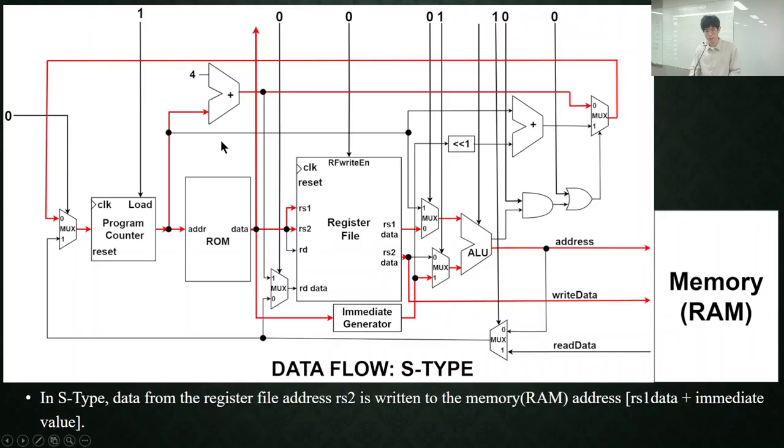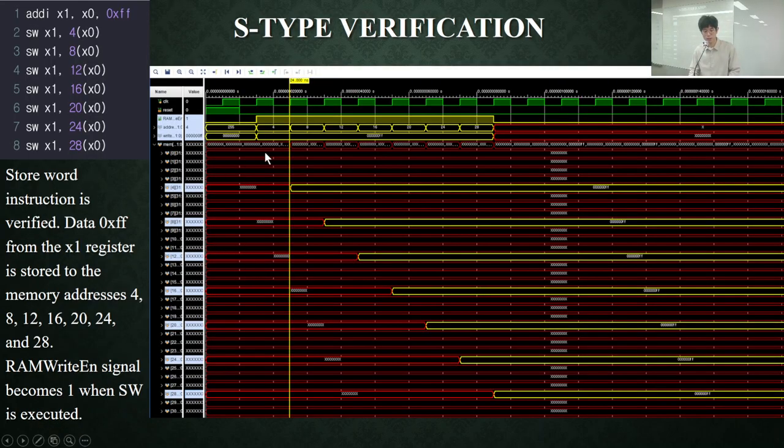This shows the data flow of S-type instruction. RS1 data and the immediate value is added by the ALU, and this is conveyed to the memory as its address. RS2 data is written to that address of the memory. This is the simulation result of store word instruction.